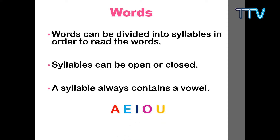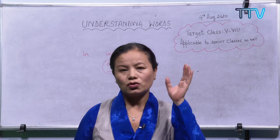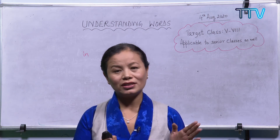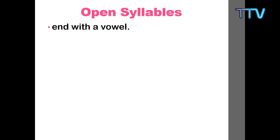You all know the vowels — A, E, I, O, U. These are the five vowels; the rest of the 26 English alphabet letters are consonants. Open syllables end with a vowel, and closed syllables end with a consonant. For example, 'pen' is a closed syllable because it ends with N, which is not a vowel. Open syllables end with a vowel and often have a long vowel sound.